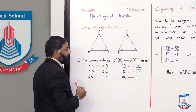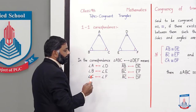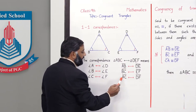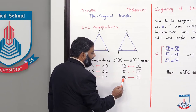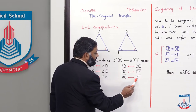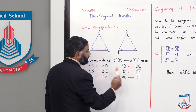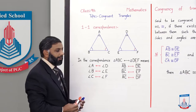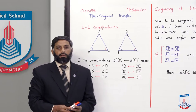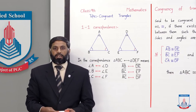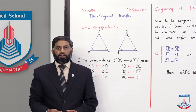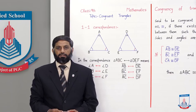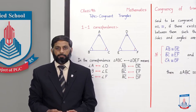Last line segment AC corresponds to line segment DF. Ab students, correspondence humein samajh aa gayi. Ab hum congruency of triangles samjhenge.